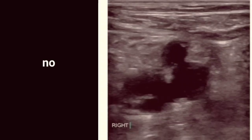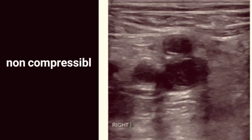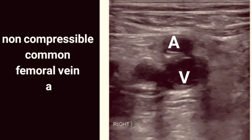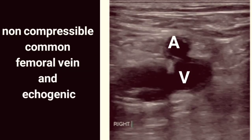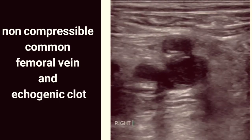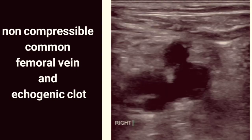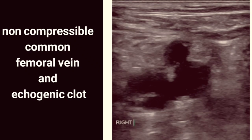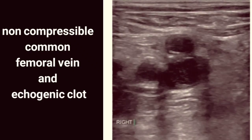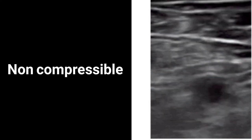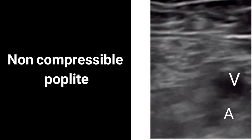Number two: non-compressibility with ultrasound. We can detect a DVT by compressing the veins. If we apply pressure with the probe until the artery compresses lightly and the vein compresses completely, there is likely no DVT in that region. But if we apply enough pressure that the artery compresses but the vein doesn't compress completely, this is considered an uncompressible vein, and the patient likely has a clot in that region.